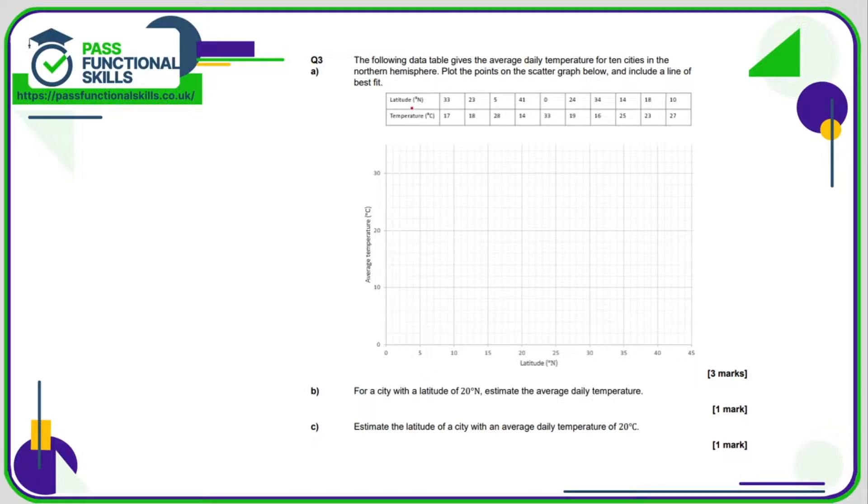So for question number three we just need to plot a graph for this information. We've got latitude along the bottom and temperature at the side. So a latitude of 33 is a temperature of 17, so 33 there's 30, 31, 32, 33 and we're going up to 17.